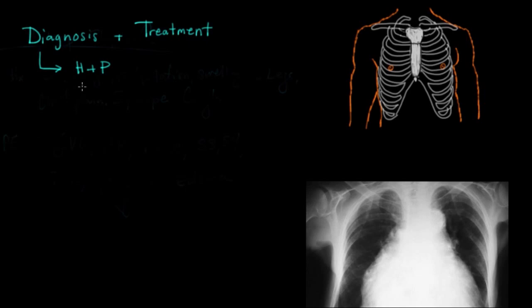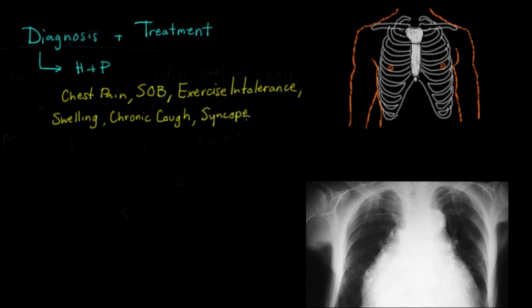So let's start with history. On history, you want to know if the patient's had any chest pain, any shortness of breath, any trouble with exercise or exercise intolerance, any swelling in their extremities, and maybe a chronic cough. And again, none of these are really specific for valvular heart disease, but they could all point you in the direction of something going wrong with the heart and maybe some history of syncopal episodes or fainting or any palpitations.